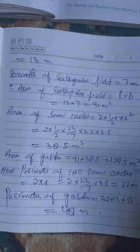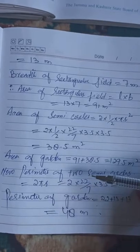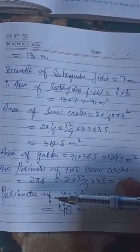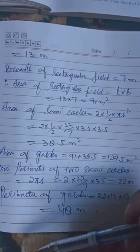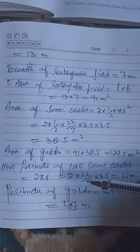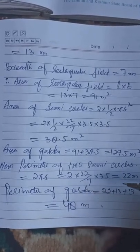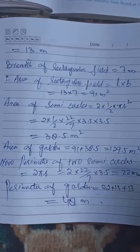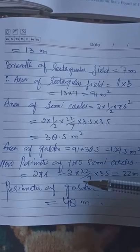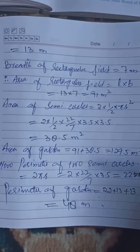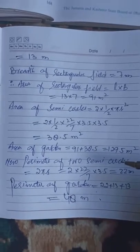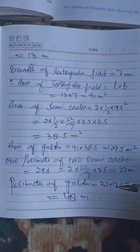The perimeter of the two semicircles: perimeter of semicircle equals 2 into 22 over 7 into 3.5, which equals 22 meters. The arc of the two semicircles is 22 meters, contributing to the total perimeter of the garden.